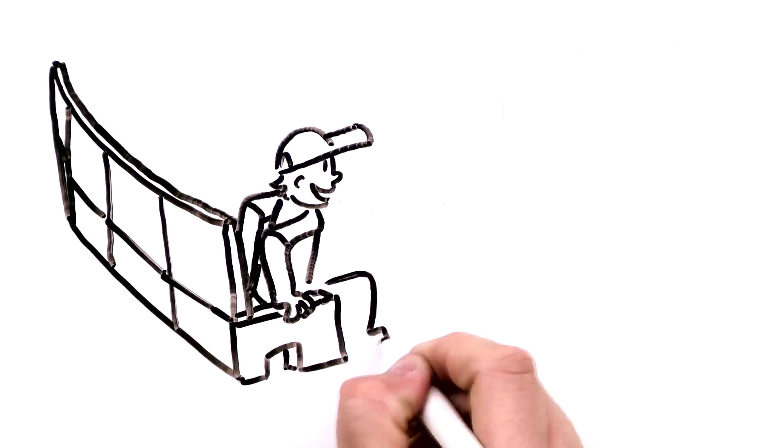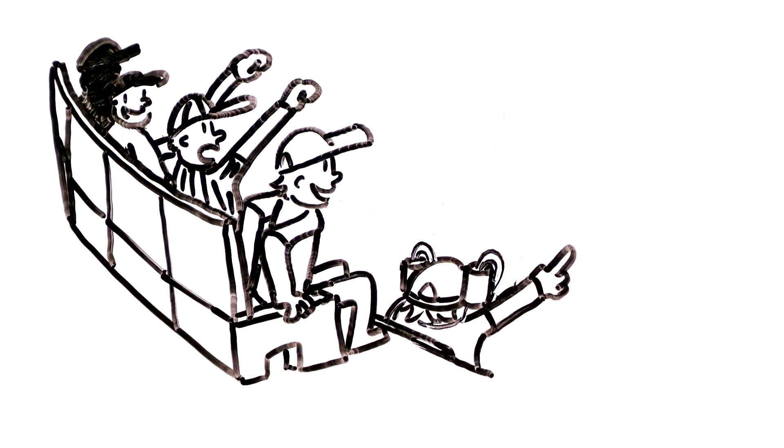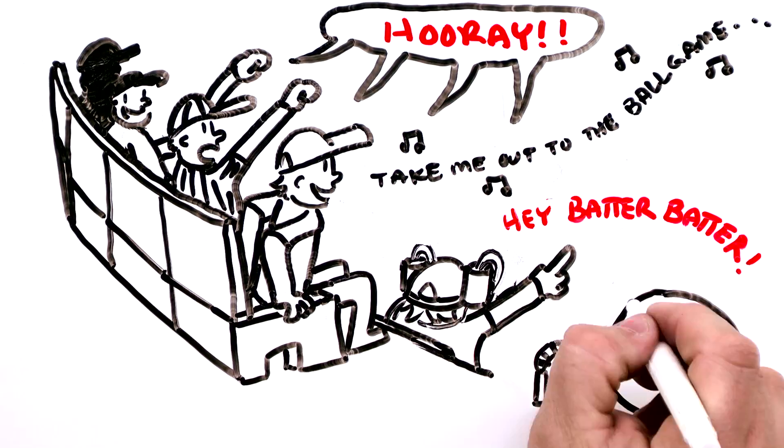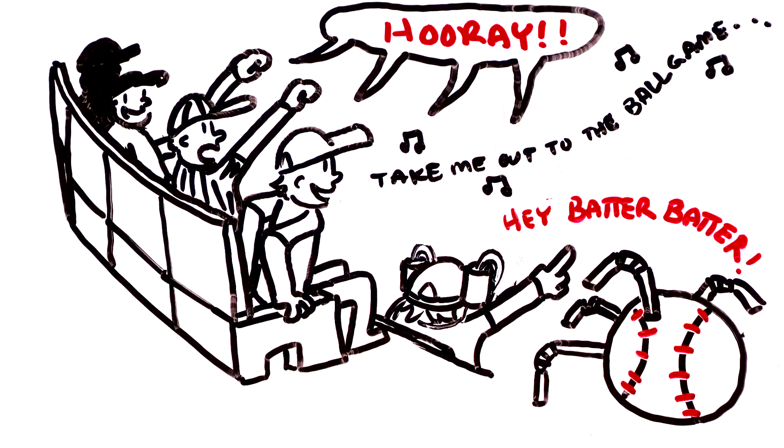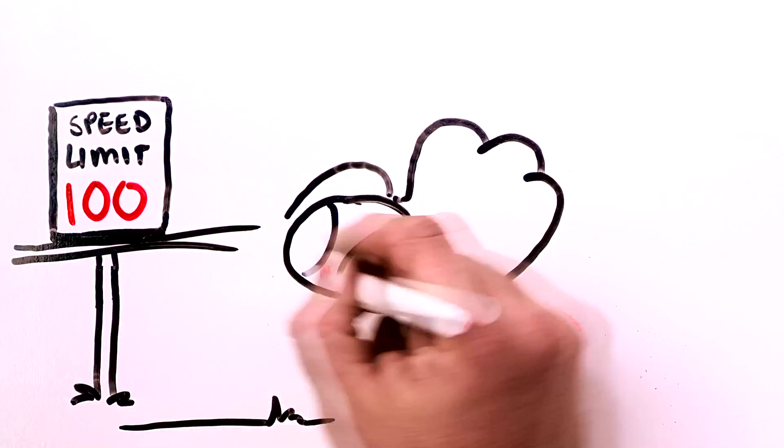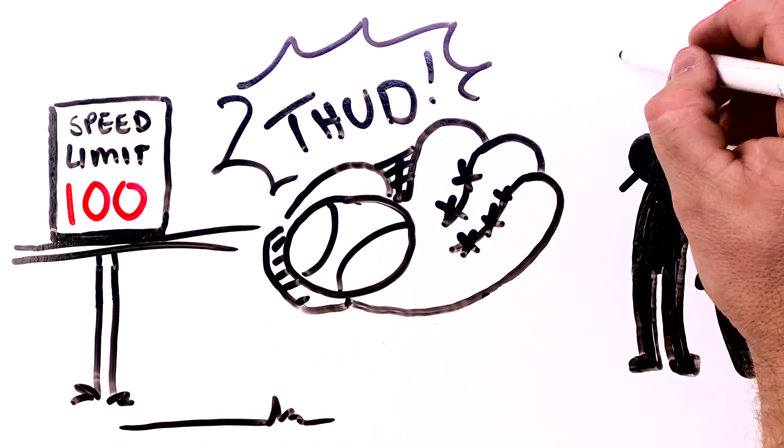On the edge of their seats, baseball fans cheer, sing, chant, and have pitch after pitch to quench their thirst. A near 100 miles an hour fastball hits the glove. Another out.